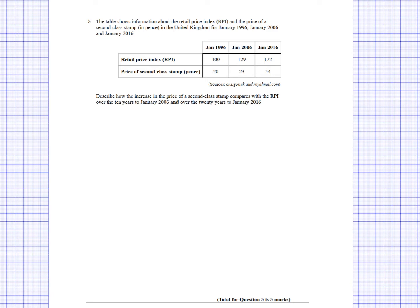Then I need to do the comparison over the 20 years to 2016. The RPI increased by 72%. The stamp price went from 20p to 54p, which is more than double, so more than a 100% increase. I need to find the exact value: 54 divided by 20 gives an index number - like 23 over 20 gives 1.15, meaning an index of 115, which is much less than the RPI of 129. Similarly, I should do 54 divided by 20, find the percentage increase, and compare it to the 72% RPI increase.